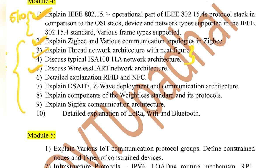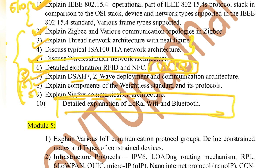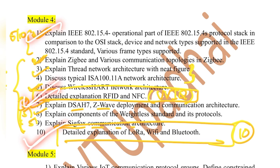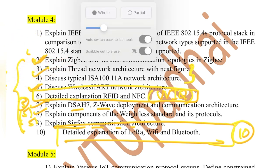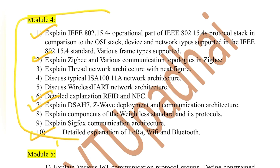RFID and NFC are marked as very, very important — any one of these two could definitely be asked, so don't miss them. Then Dash 7, Z-Wave deployment and communication architecture (five marks), concepts of Weightless (five marks), Sigfox communication architecture (five marks), and detailed explanation of LoRa, Wi-Fi, and Bluetooth — any two could be asked for 10 marks. In the fourth module, don't miss questions one, six, and ten at any cost. Two and seven are also very important. Cover these ten questions and you'll be ready for module four.